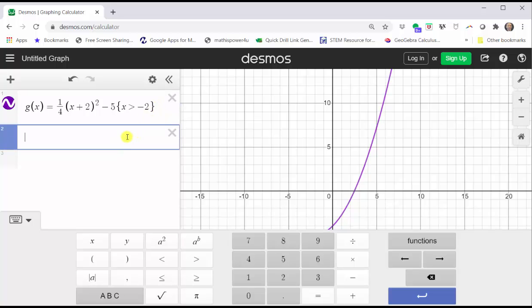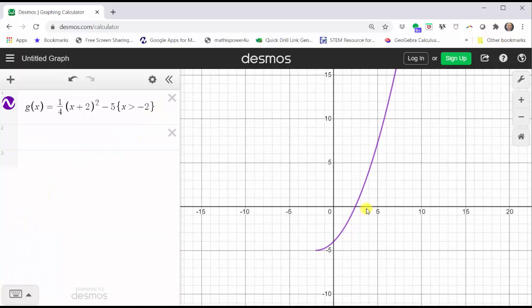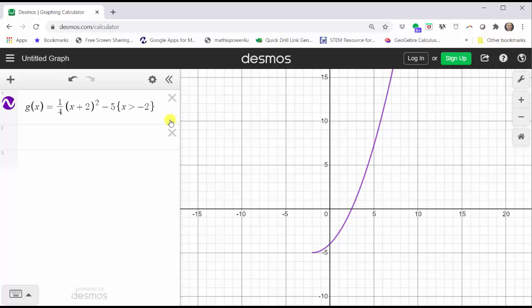And now if we click in cell two and close the Desmos keypad, we have a nice graph of the function over the restricted domain. But again here, x is greater than negative two, not equal to negative two.